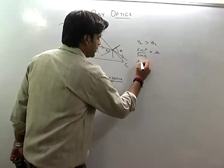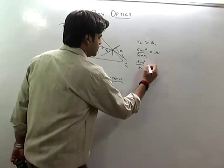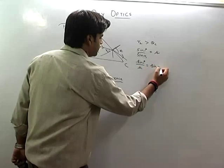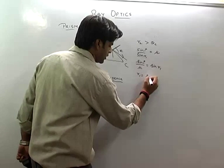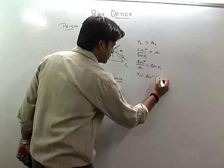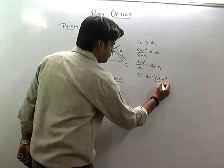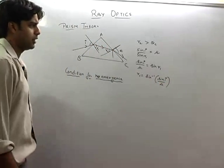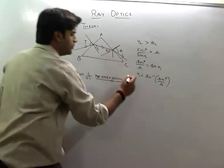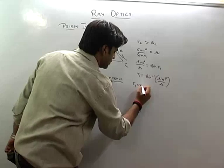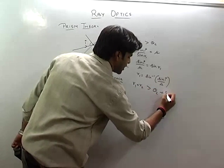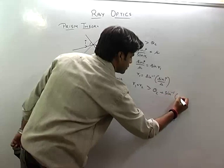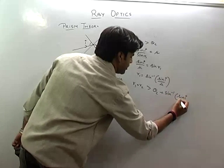That means sin i upon mu is equal to sin of r1. I can write that r1 is equal to sin inverse of sin i upon mu. And r1 plus r2 should be greater than theta c plus sin inverse of sin i upon mu.